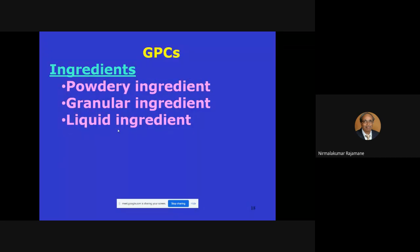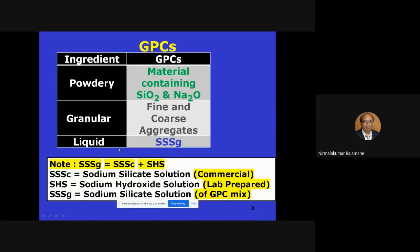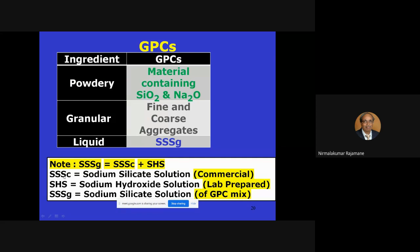Geopolymer concrete has a powder ingredient, a granular ingredient, and a liquid ingredient. The powder ingredient contains SiO₂ and Al₂O₃. Granular content is fine and coarse aggregate — mostly filler systems. The liquid is sodium silicate solution, which is available in commercial form.